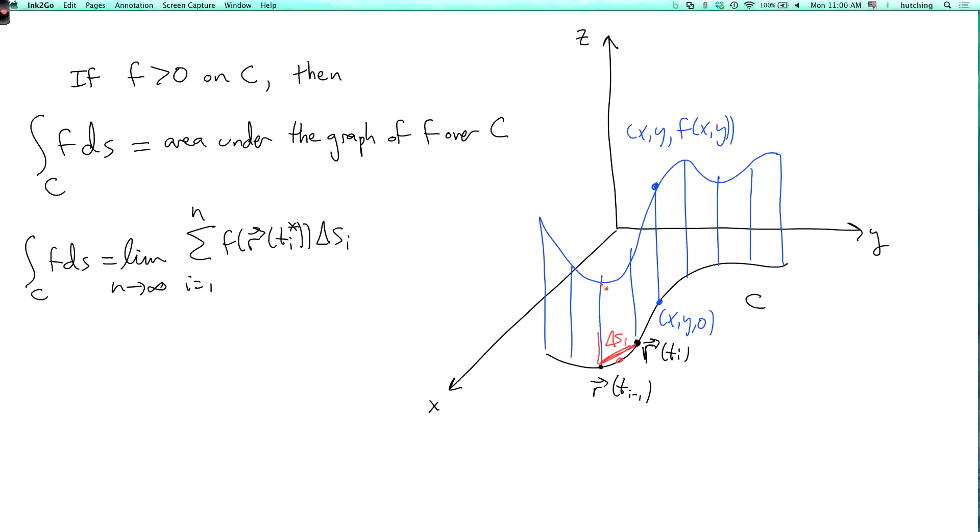So what we're basically doing is we're taking this little piece of the region under the graph, and we're approximating it by a rectangular strip, and taking the area of that rectangular strip. So we're approximating the region under this graph by rectangular strips, and adding up their areas, and then in the limit we get the area under the graph.